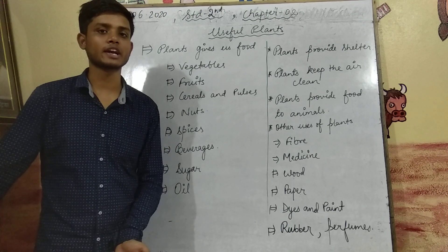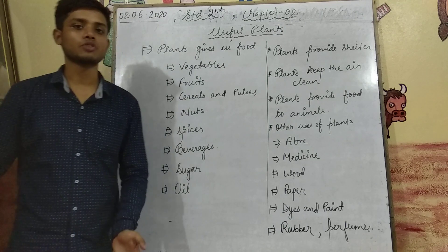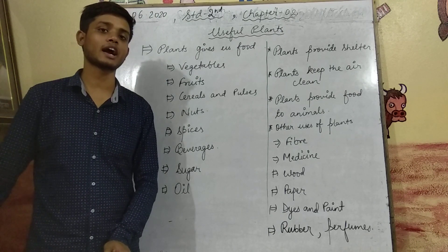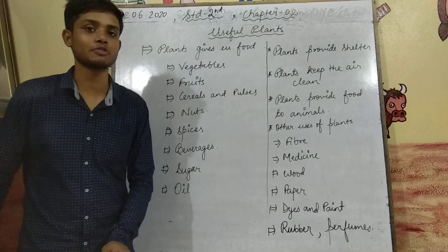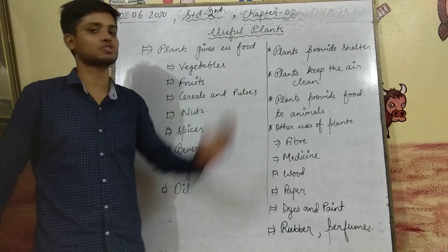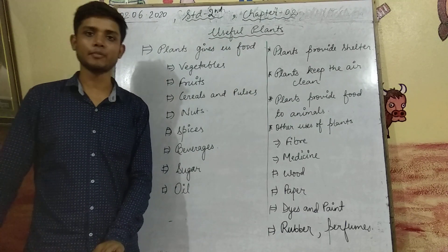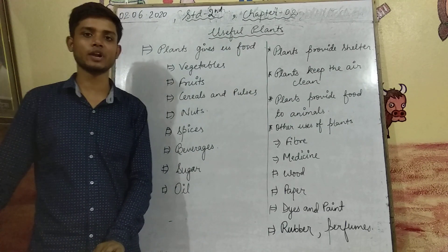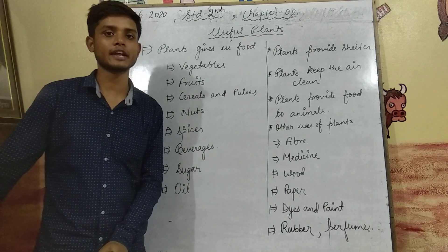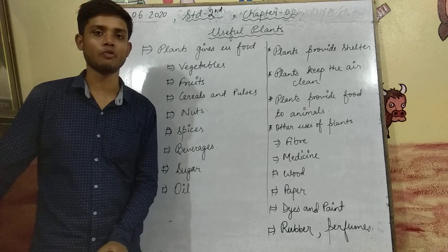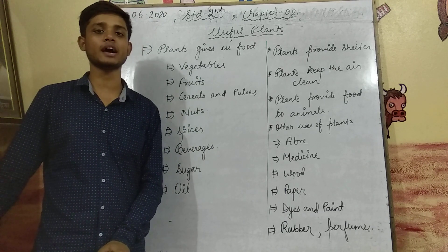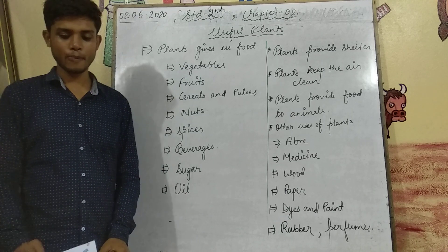Now, how do we get sugar from plants? We also use sugar in our food. We use plant-based products which provide us sugar, which is good in food.